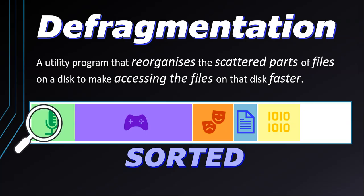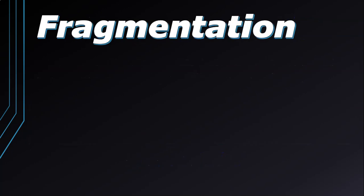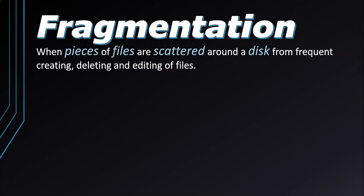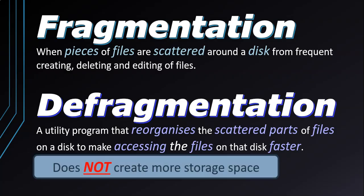Now it is sorted — when we are trying to read the data it's a lot quicker to find what we're looking for. To recap: fragmentation is when pieces of files are scattered around the disk from frequent creating, deleting, and editing of files. Defragmentation is when a utility program reorganizes the scattered parts of the files on the disk so that accessing the files becomes faster. It improves access times — it does not, however, create more storage space.